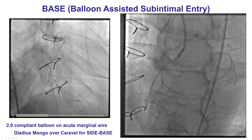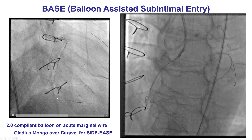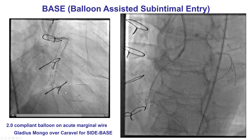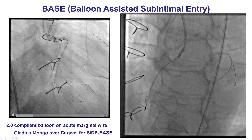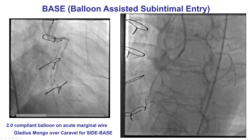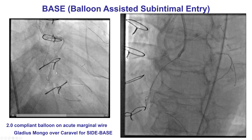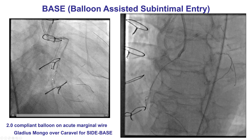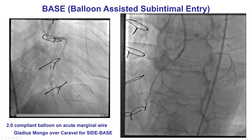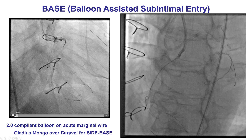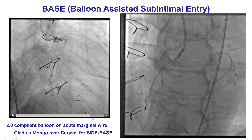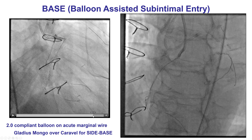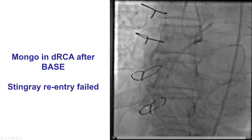The challenge here was that the wires wanted to follow the pathway of the second acute marginal. To overcome this, we used the so-called side-based technique, which involves inflating a balloon halfway in, halfway out of the side branch — the acute marginal — and then advancing a knuckled guide wire. That was a Gladius Mongo. Instead of going into the side branch, the wire was able to follow the course of the distal right coronary artery, so the side-based technique was successful.